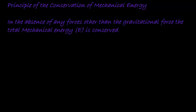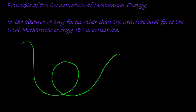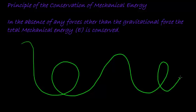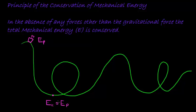A very good example is a roller coaster. When our cart starts way up at the top, it's not really moving — it has potential energy. When it reaches the bottom, it now has kinetic energy — full kinetic energy. This kinetic energy at the bottom must be equal to the potential energy it had initially.